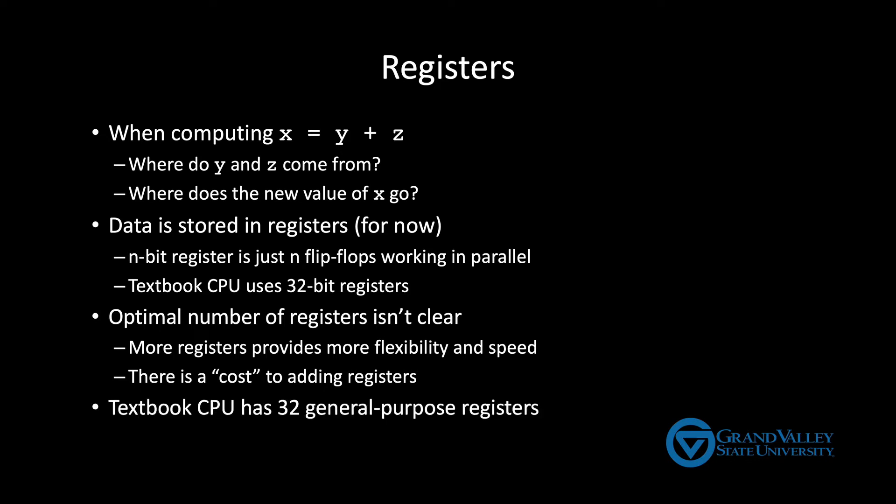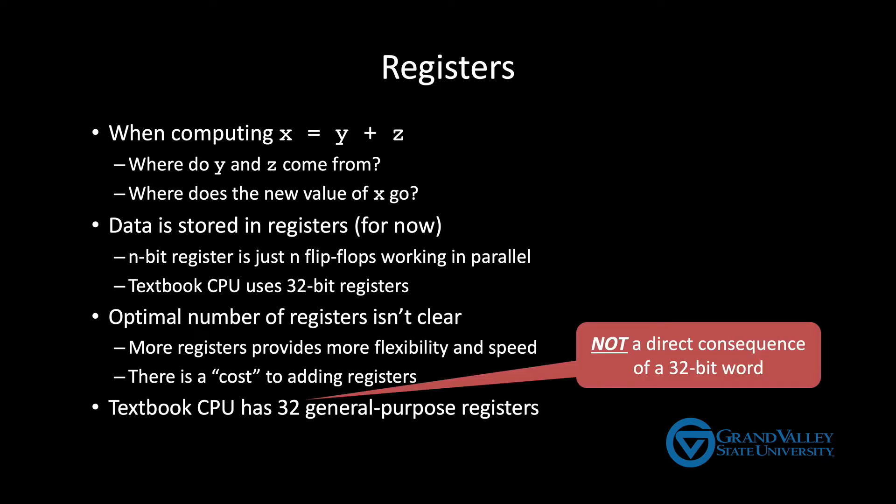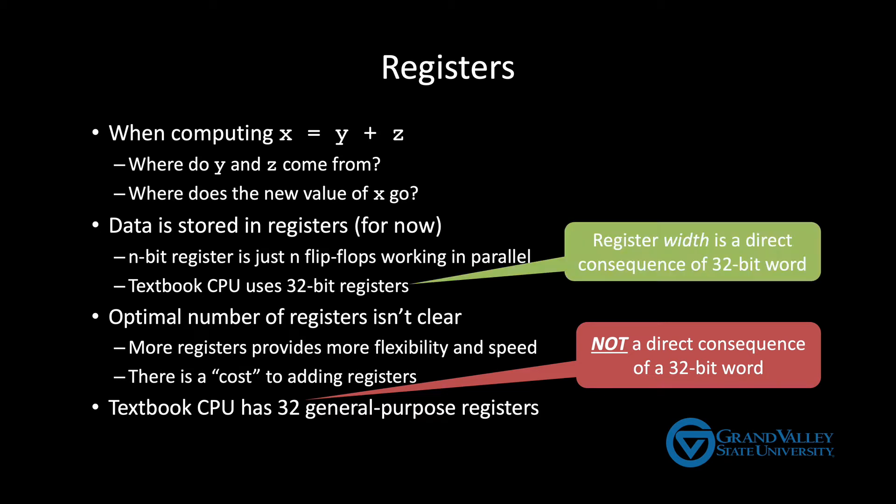Now be careful. This choice of 32 is a bit misleading because it's not a direct consequence of the word size. It's not exactly a coincidence, but the relationship is very indirect. Again, we'll have to wait till later in the semester after we've seen more of the CPU's design before I can effectively explain where this 32 came from. For now, just remember that it's the width of the registers that is tied to the word size, not the number of registers.